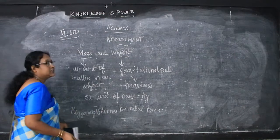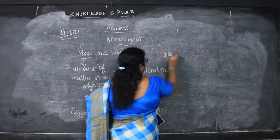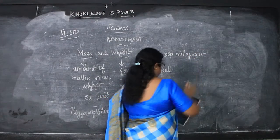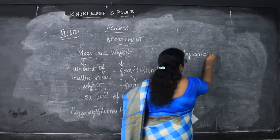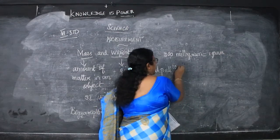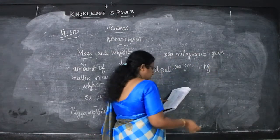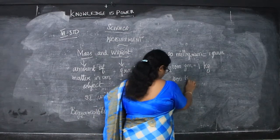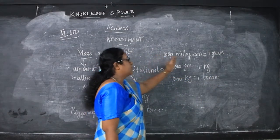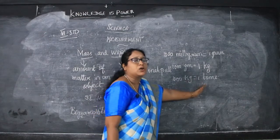1,000 milligrams is equal to 1 gram. 1,000 grams is equal to 1 kilogram. And 1,000 kilograms is about 1 ton.